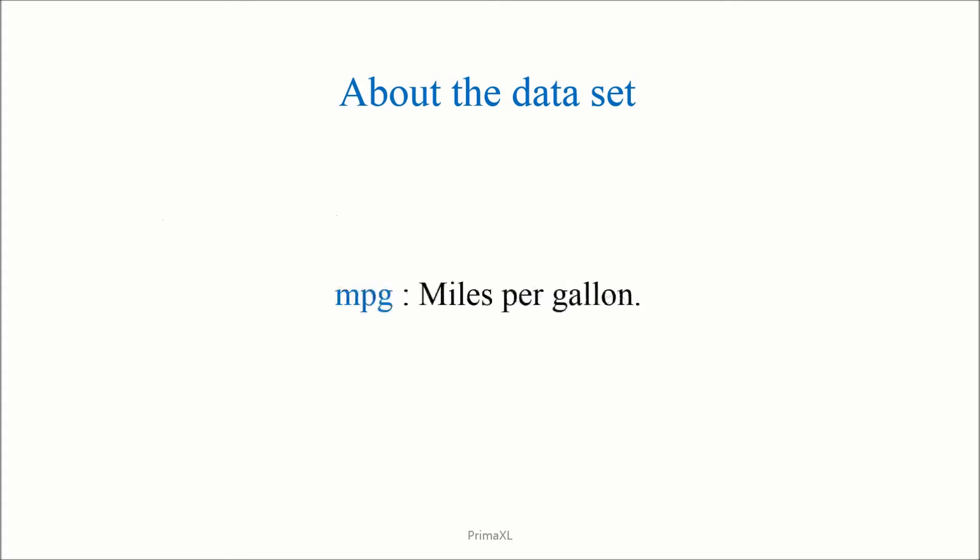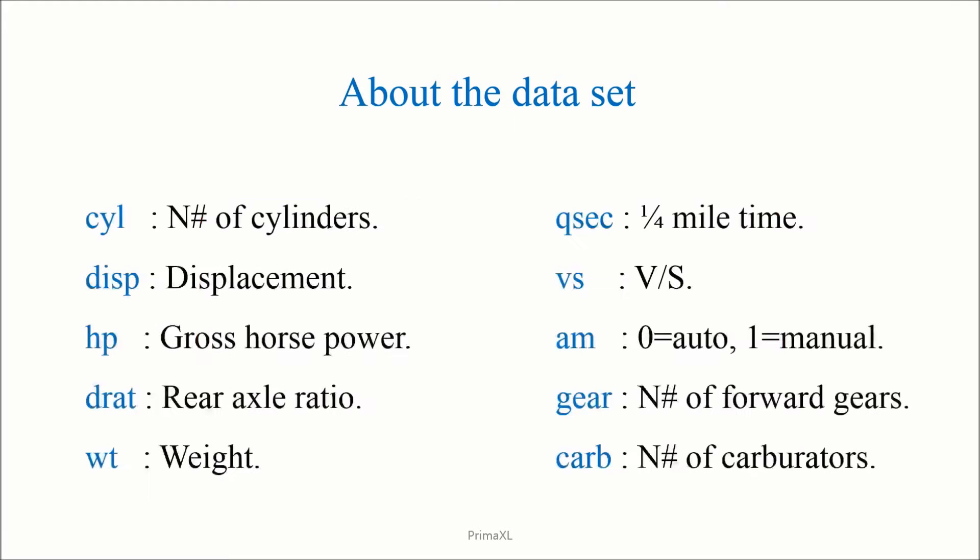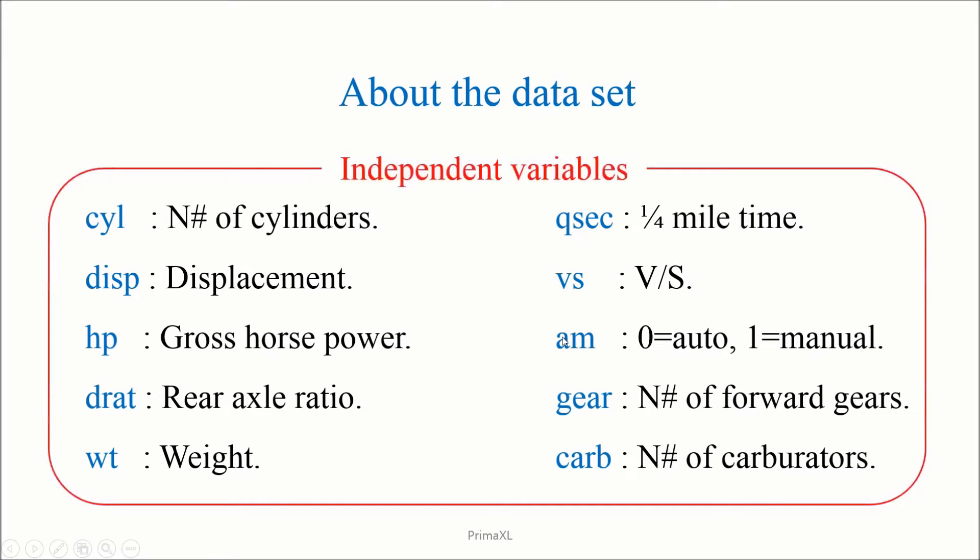We have only 32 car models. As we'll see later, there is a column in the data table named MPG. MPG stands for miles per gallon. MPG would be the dependent variable. Then, we have 10 more columns or variables that would have some effect on the miles per gallon. For example, CYL stands for the number of cylinders in the car engine. HP stands for the horsepower. WT stands for the weight. AM is a variable that tells you whether the transmission is manual or automatic. All these would be the possible independent variables for the linear model.